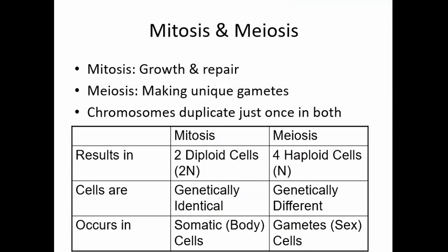Finally, this table shows some of the similarities and differences between mitosis and meiosis. Mitosis has the purpose of growth and repair, while meiosis is for making unique gametes. Through both processes, the chromosomes duplicate just once, but they lead to different results. Mitosis goes from one diploid cell to two diploid cells; meiosis goes from a diploid cell to four haploid cells. Mitosis results in genetically identical cells, but because of crossing over, meiosis results in genetically different cells. Mitosis happens throughout the body in somatic cells, whereas meiosis only happens when we need gametes for sexual reproduction.